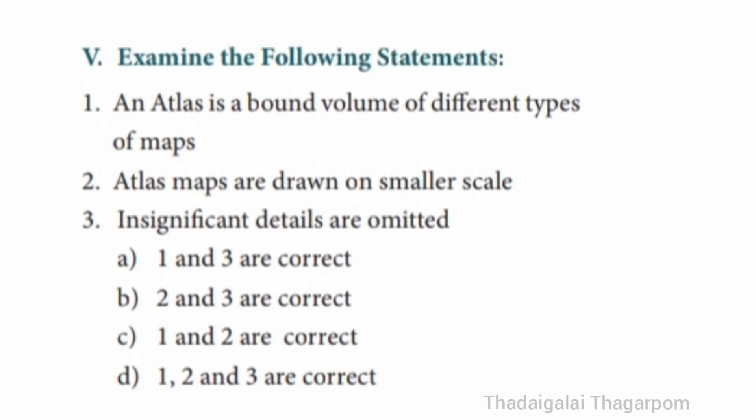Roman No. 5: Examine the following statements. Question 1: Statement 1 – An Atlas is a bound volume of different types of maps. Statement 2 – Atlas maps are drawn on a smaller scale. Statement 3 – Insignificant details are omitted. The correct answer is option D – Statements 1, 2 and 3 are correct.